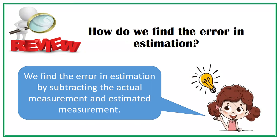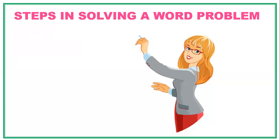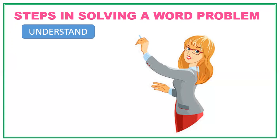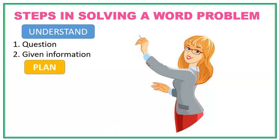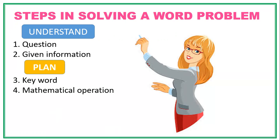Now let's proceed to our new lesson. Let us discuss first the steps in solving a word problem. First, we need to understand — the question being asked in the problem and the information given. These are important for us to carry out a plan. In planning, we should recognize the keywords that will help us identify what mathematical operation is appropriate to solve the problem.